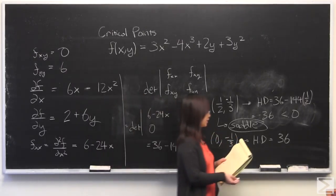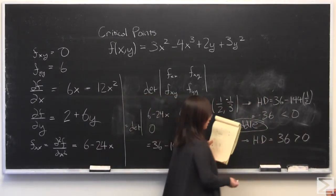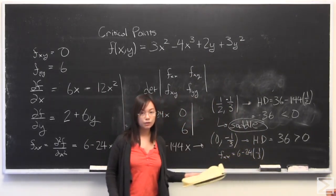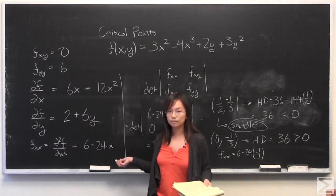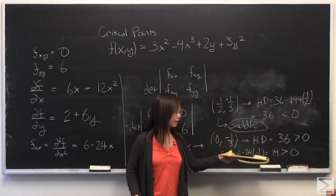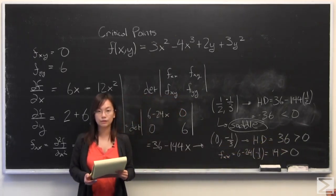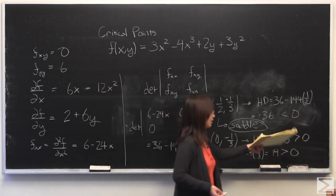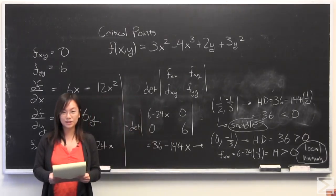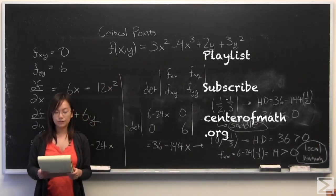That's pretty straightforward. For the next one, (0, -1/3): you plug in the value of 0 and you get 36. Since 36 is greater than 0, we now have to analyze the second partial derivative with respect to x. That gives us 6 minus 24 times 0, which equals 6. Wait — actually, we plug in x = 0 into 6 minus 24x, and we get 6. And since 6 is greater than 0, from the Hessian determinant and the second partial derivative with respect to x both being positive, we find that this is a local minimum.